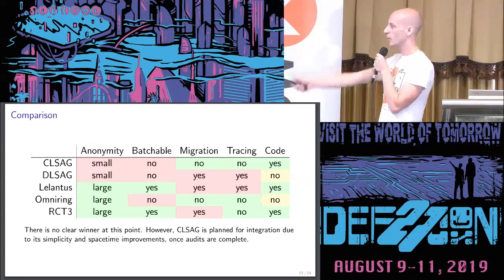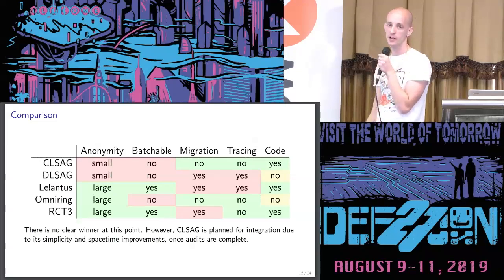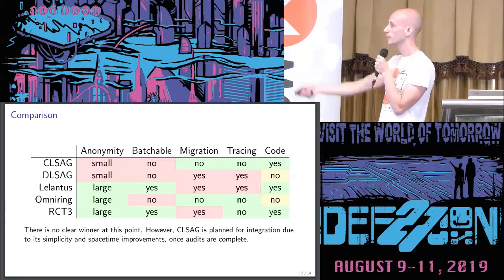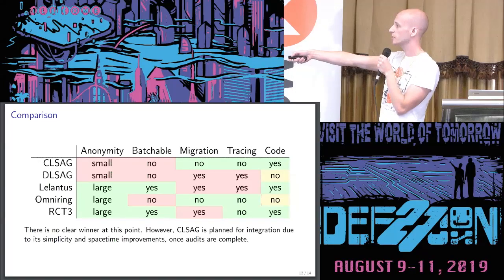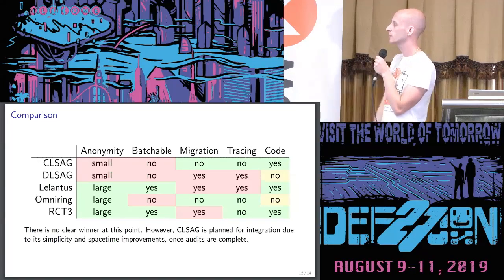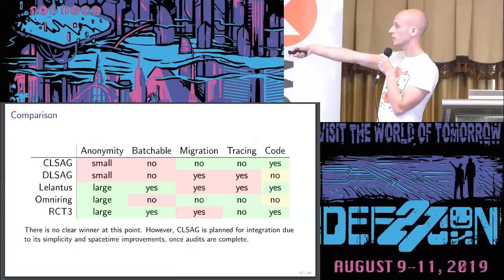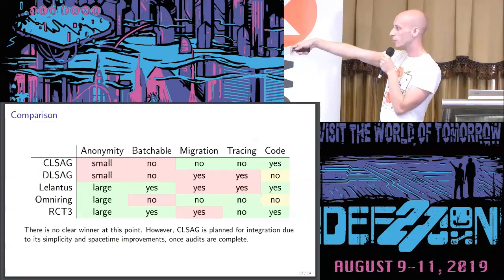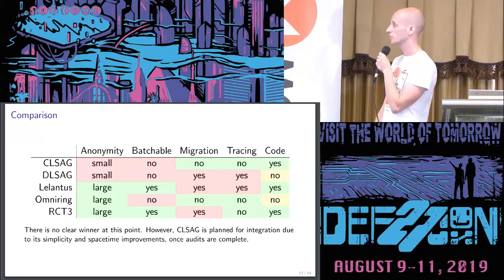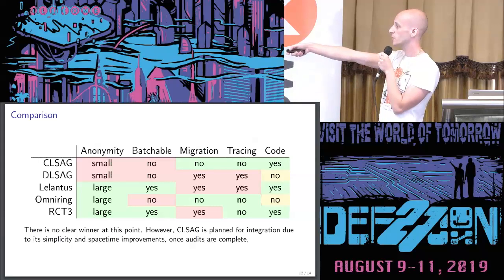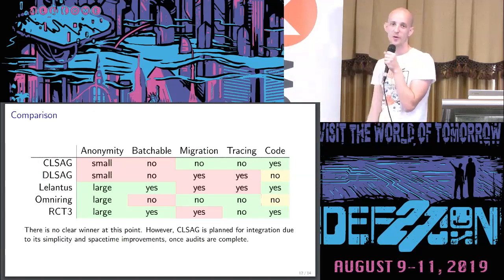If I added Monero's current protocol to the comparison table: anonymity set is quite small, on the order of about 10 notes. It is currently not batchable — some parts involving range proofs are very batchable, but signatures are not batchable at all. In terms of migration, there was a sort of migration when we moved to the confidential transaction model, but it was a pretty clean one. Tracing, as far as we know, does not have any issues — and of course, we have code for it.